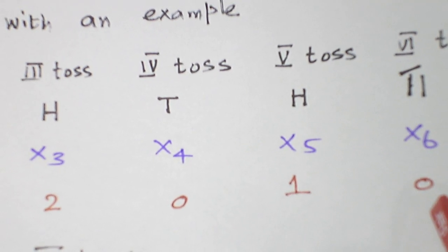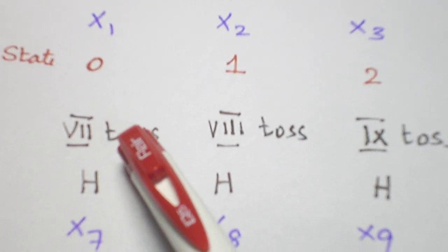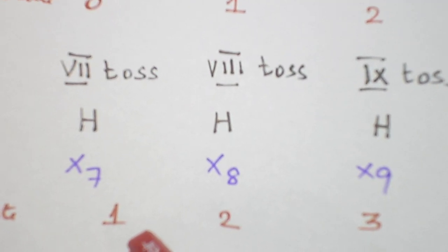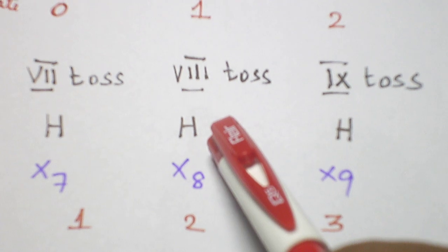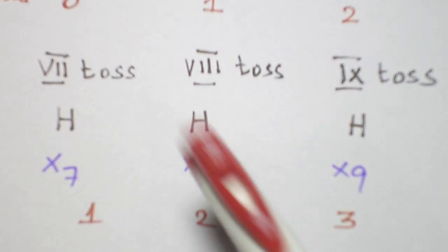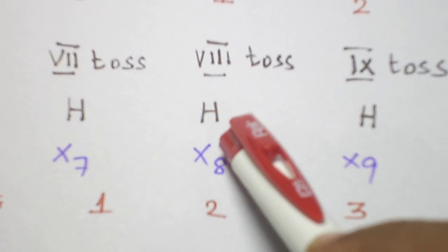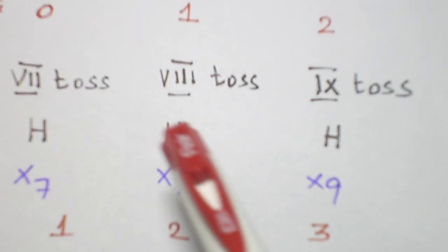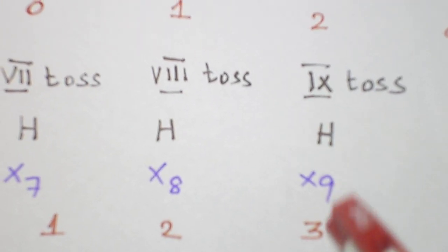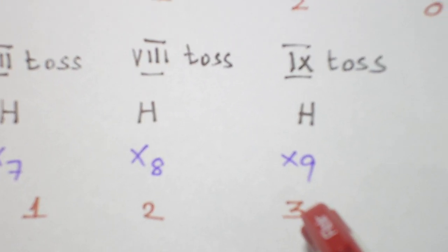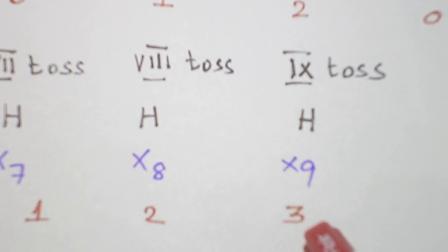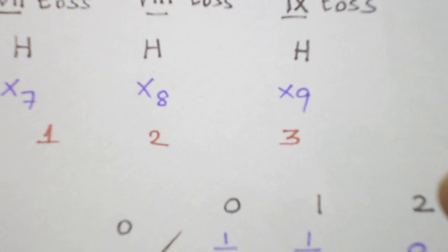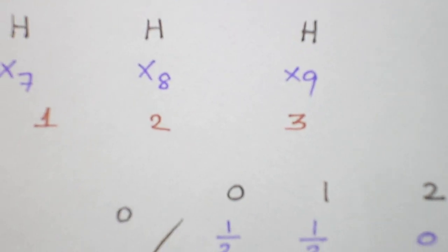Sixth toss again there is a discontinuity — we got a tail — so it goes to zero. Seventh and eighth tosses give two continuous heads. Ninth toss gives three continuous heads. So once we got three continuous heads, the game is over and it will not be proceeded further.